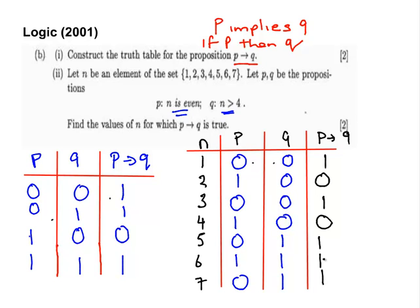And finally, 1 and 1, there we have it. So the values are 1, 3, 5, 6, and 7. Those are the values for which P implies Q is true. That's that part done.